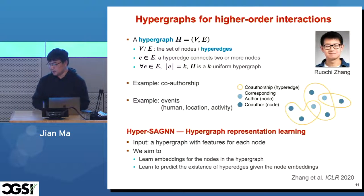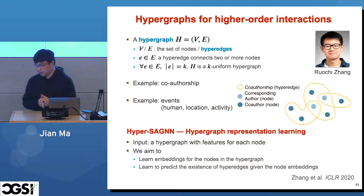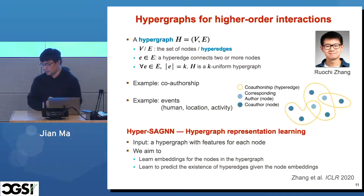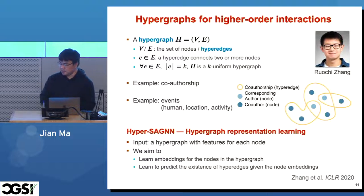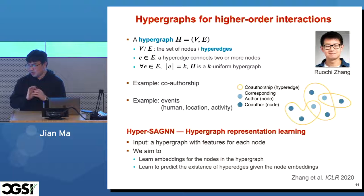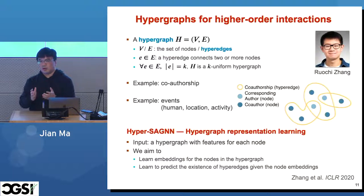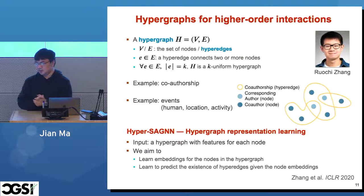We found that these earlier methods have some limitations, so we developed an approach based on hypergraphs. Let me step back and explain what hypergraphs are. You all know graphs — nodes and edges. In a hypergraph, you also have nodes and edges, but each hyperedge connects two or more nodes. If all hyperedges have k nodes, it's called a k-uniform hypergraph.